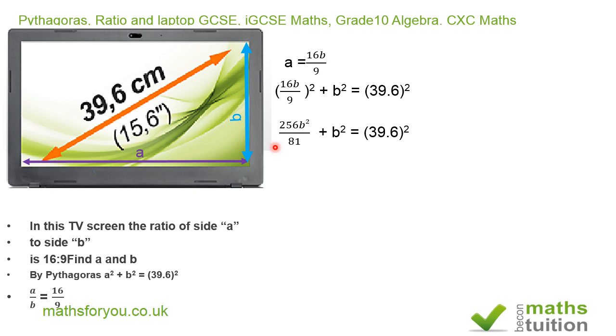Now if we square this bit here, we end up with 256b²/81, because 16² = 256 and 9² = 81, and then plus b² = (39.6)².